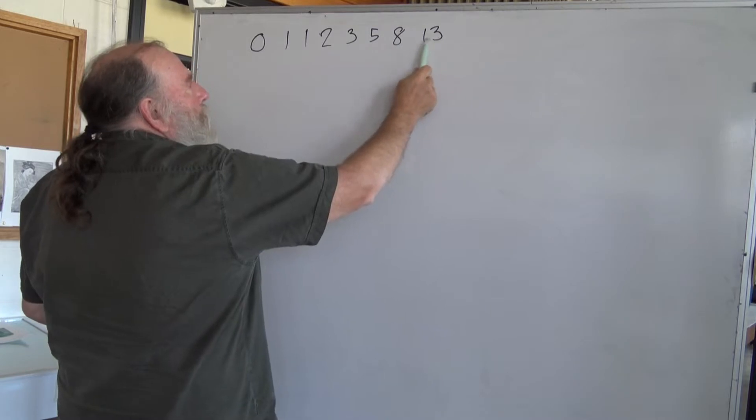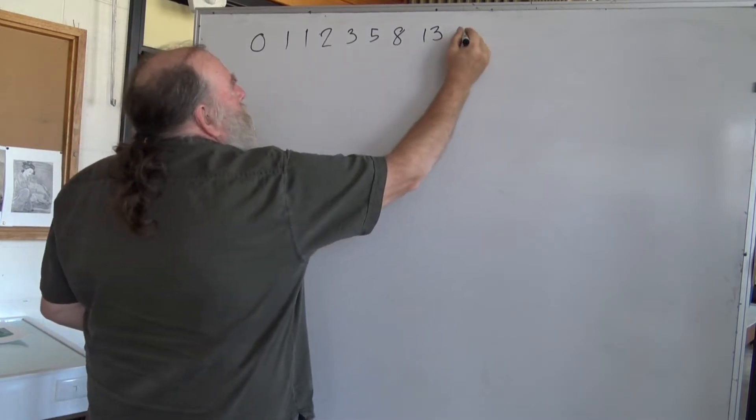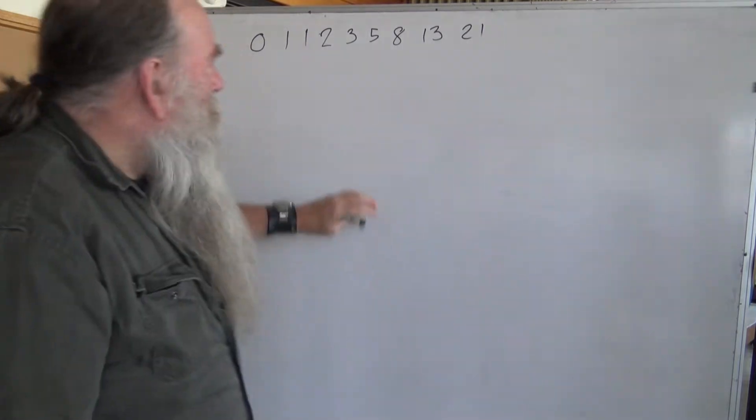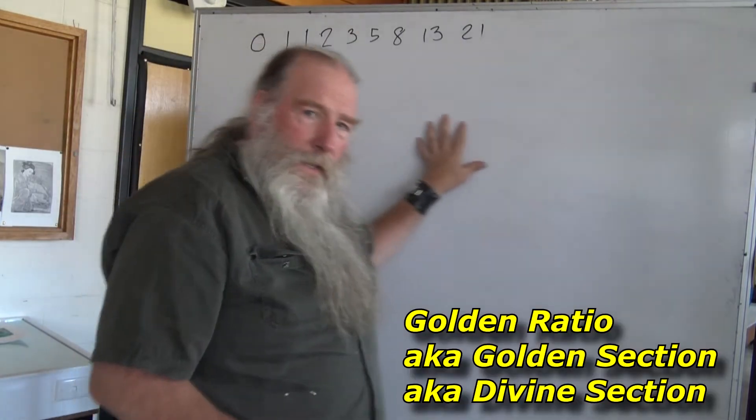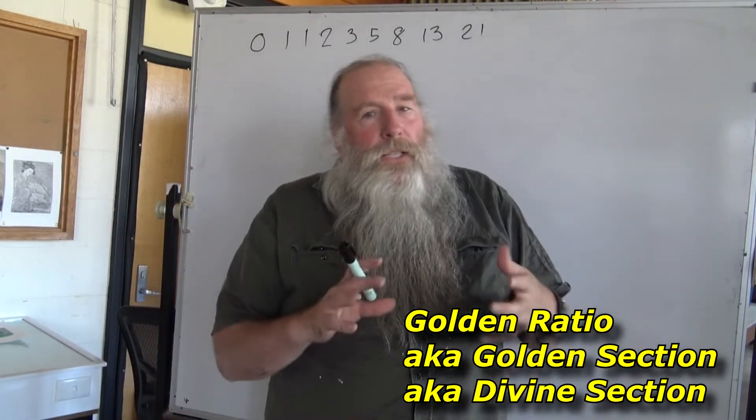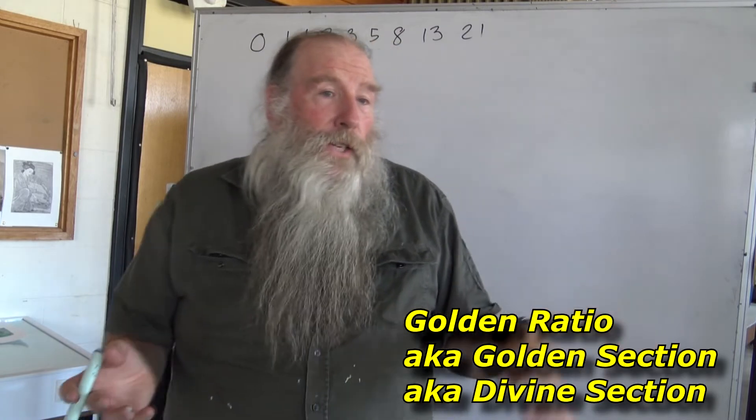So the next one, you add those two numbers together to get the next one. I don't think you really would go any further than that when you are working out composition for art. I'll show you where this comes into the spiral, but let's take it back to what's called the golden section.